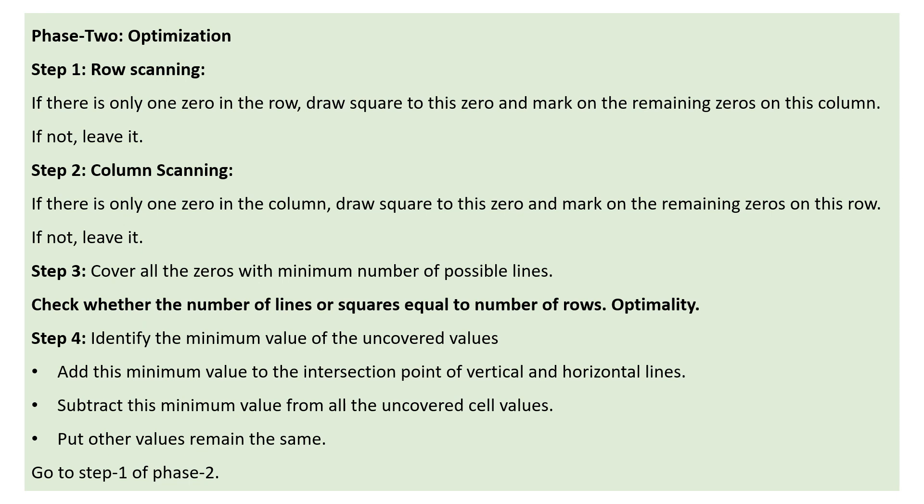If optimality is not achieved, continue to step four: identify the minimum value of the uncovered values. Add this minimum value to the intersection points of the vertical and horizontal lines covering the zeros, and subtract this minimum value from all uncovered cell values. Prepare a new matrix table with these updated values, keeping other values the same. Then go back to step one of phase two — row scanning, column scanning, covering zeros — and repeat until the number of lines equals the number of rows.